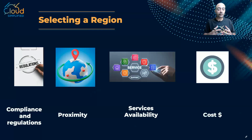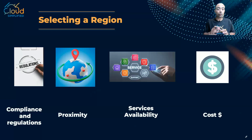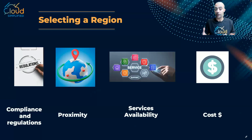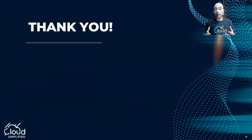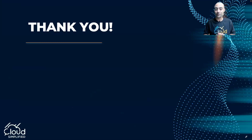The final criterion is cost. If you don't have other constraints, cost differs from one region to another — it's not the same across all regions. So you may need to go and deploy your infrastructure in the most cost-effective region. With this we come to the end of the lesson. I hope it's now clear how to select from the many AWS regions. Thank you for watching and see you in the next video.